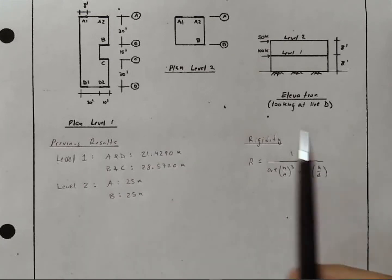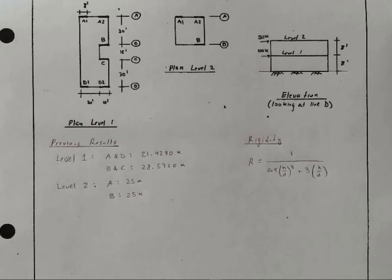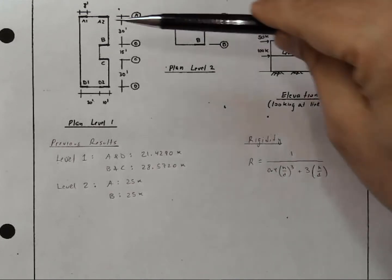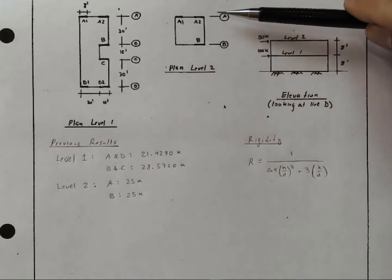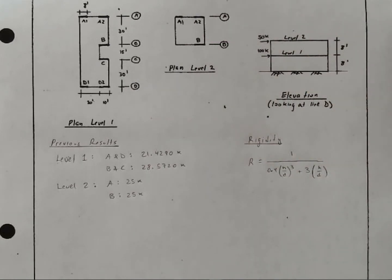I'm also copying the expression for rigidity. We only need to concern ourselves with lines A and D and A on the upper level. And the question then is, how does this force divide out into A1 and A2?